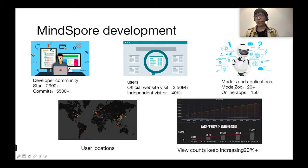MindSpore was open sourced on March 28th, 2020. It has been around seven months, and the overall development of MindSpore is rapid. We have about 3,000 stars and 5,000 commits. The website visitors are over 3 million. MindSpore model zoo now includes over 20 models, and we have over 150 applications. You can check the user map on the bottom left. Our users are from Asia, Oceania, Europe, North America, and South America, pretty much all over the world.